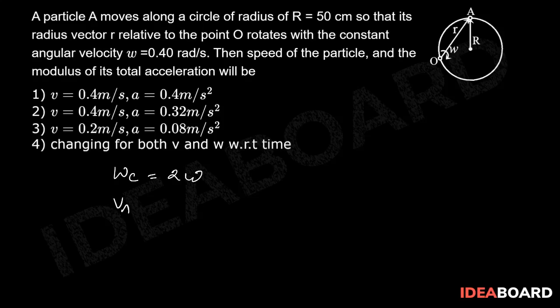Now VA = r omega_c, that is 2 omega r, which is equal to 2 × 0.4 ×